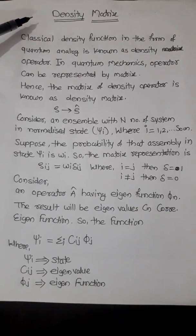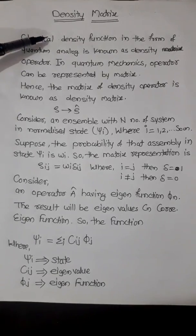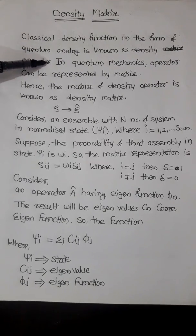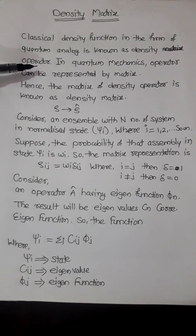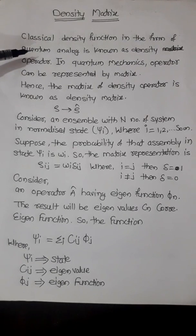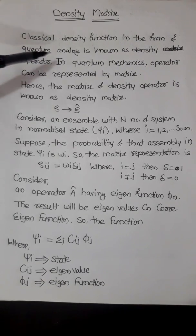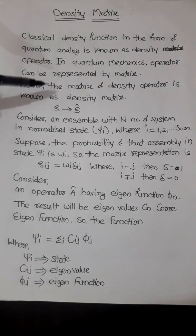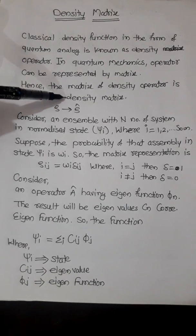The classical density function in the form of a quantum analog is known as the density operator. In quantum mechanics, an operator can be represented by a matrix. Hence, the matrix of the density operator is known as the density matrix.